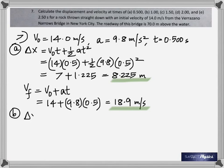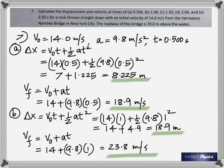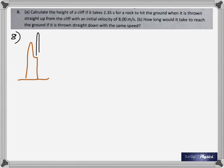You do the same thing for all the other times — it's just repetition. The answers for part b are the values you get by repeating that process for each of the given times.